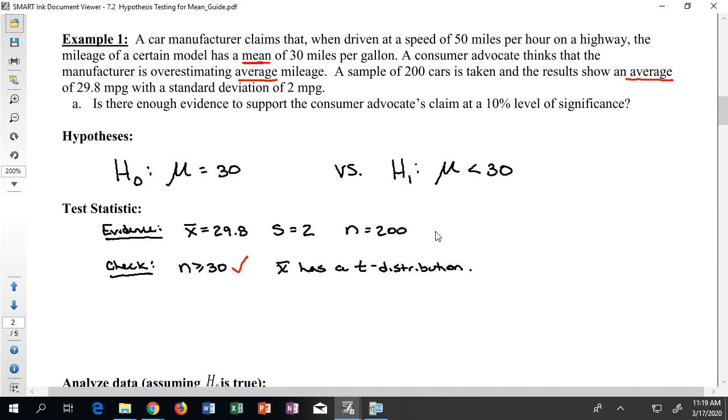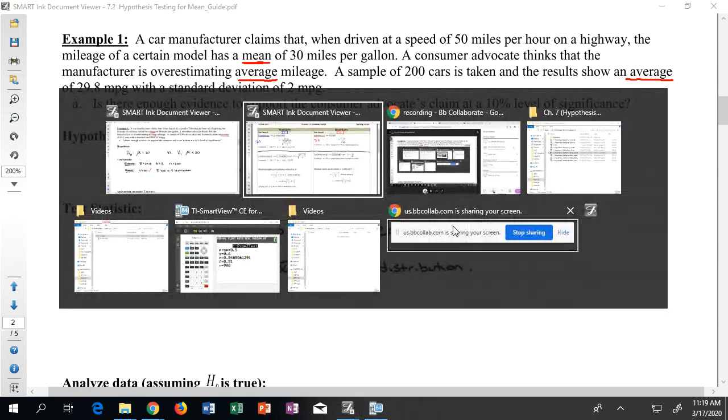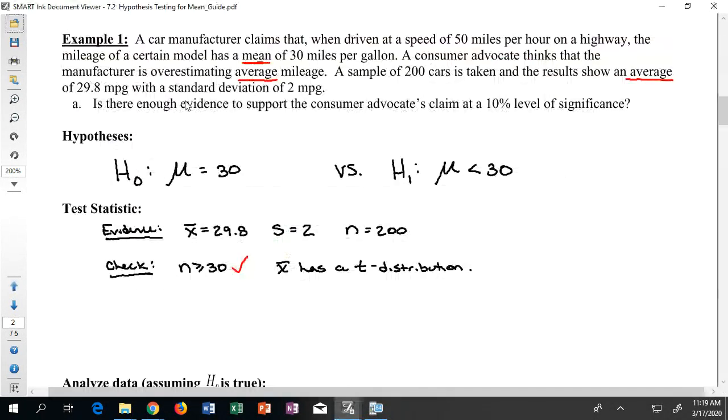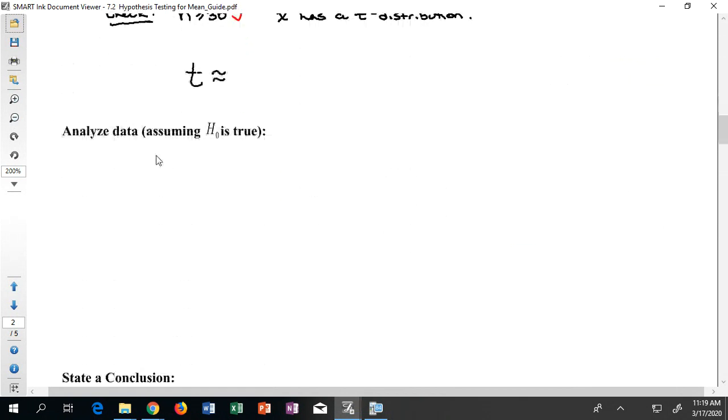For the moment, don't worry about what a t distribution is, but you can note that on the formula sheet, I'm trying to tell you that you have a t distribution by saying this is t equals, as opposed to on the other side where we had z equals. So once I know that the checks are met, I can go ahead and get ready to compute a t score, very much like a z score, just for a different distribution.